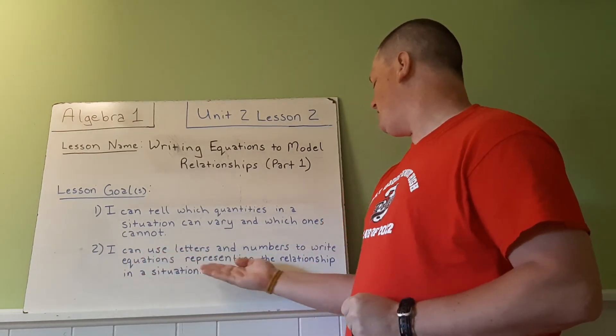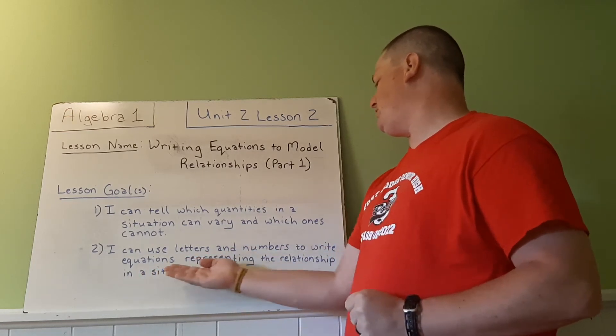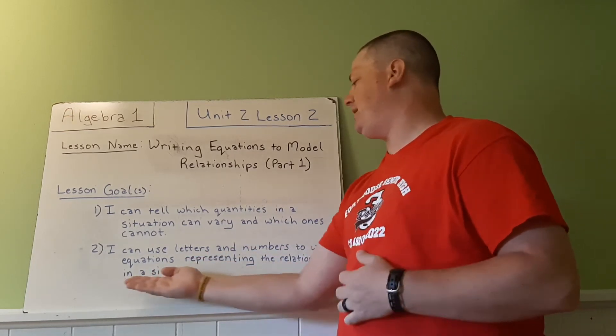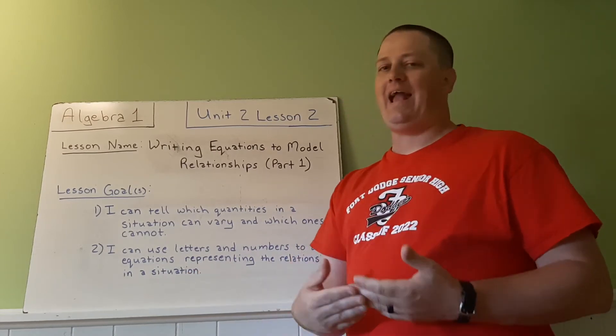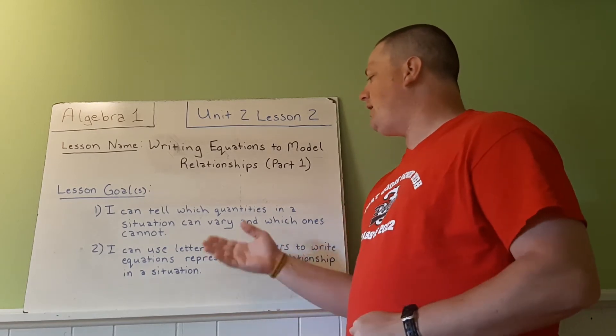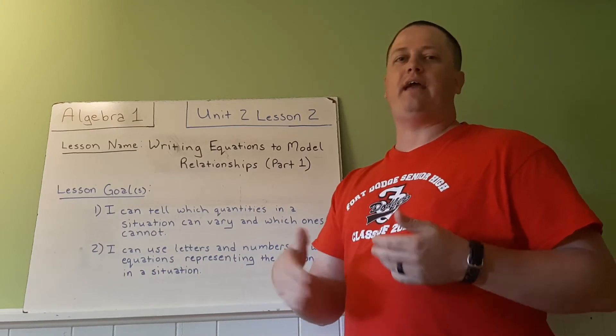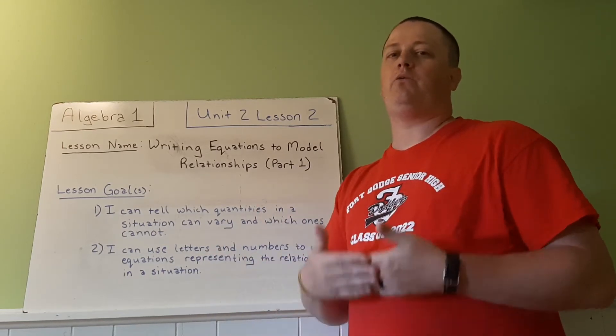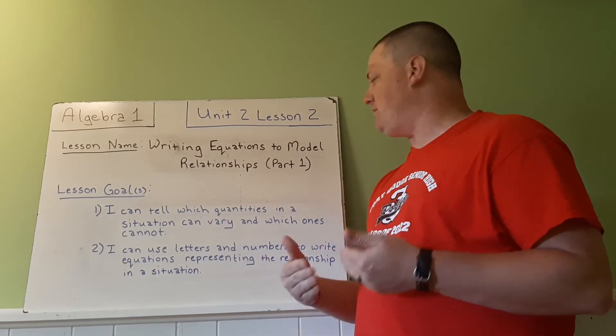I can use letters and numbers to write equations representing the relationship in a situation. For the quantities that cannot vary, we will typically use their number. For quantities that can vary, we'll use letters to represent that they can be multiple numbers. And then we'll want to write those patterns in a mathematical way to be used.